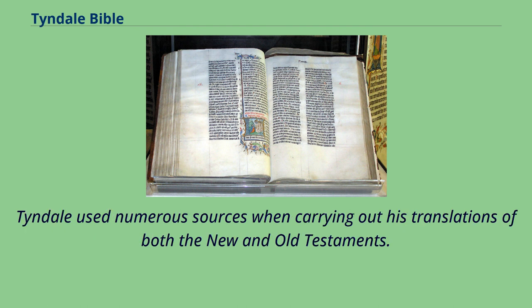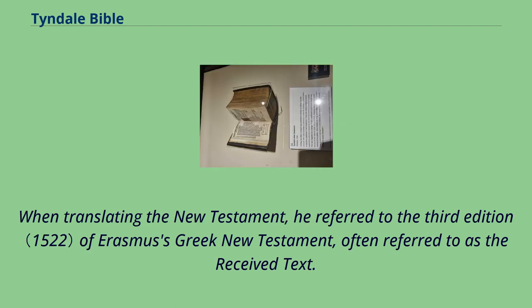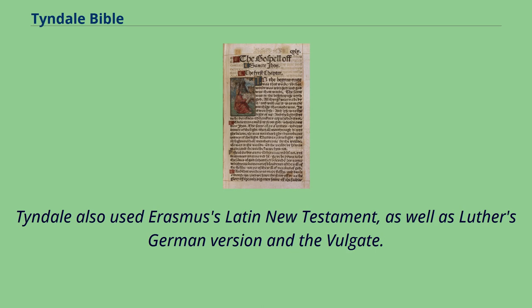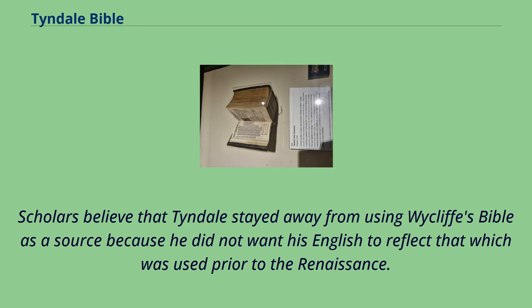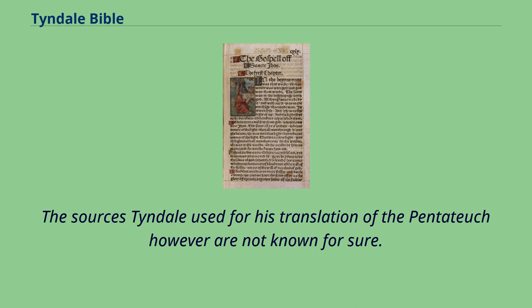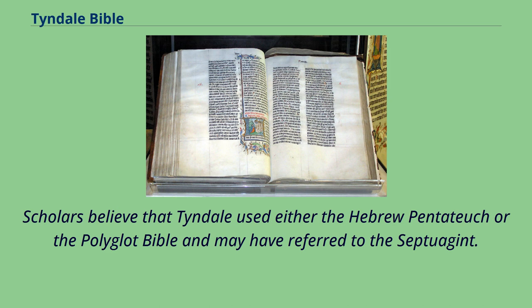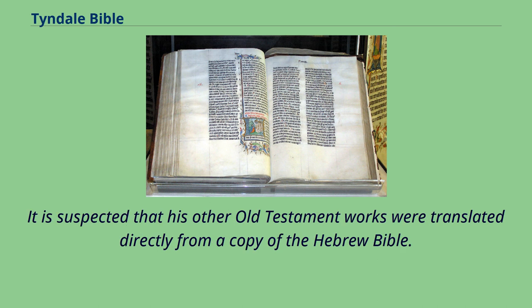Tyndale used numerous sources when carrying out his translations of both the New and Old Testaments. When translating the New Testament, he referred to the third edition of Erasmus's Greek New Testament, often referred to as the received text. Tyndale also used Erasmus's Latin New Testament, as well as Luther's German version and the Vulgate. Scholars believe that Tyndale stayed away from using Wycliffe's Bible as a source because he did not want his English to reflect that which was used prior to the Renaissance. The sources Tyndale used for his translation of the Pentateuch are not known for sure, but scholars believe he used either the Hebrew Pentateuch or the Polyglot Bible and may have referred to the Septuagint. It is suspected that his other Old Testament works were translated directly from a copy of the Hebrew Bible. He also made use of Greek and Hebrew grammars.